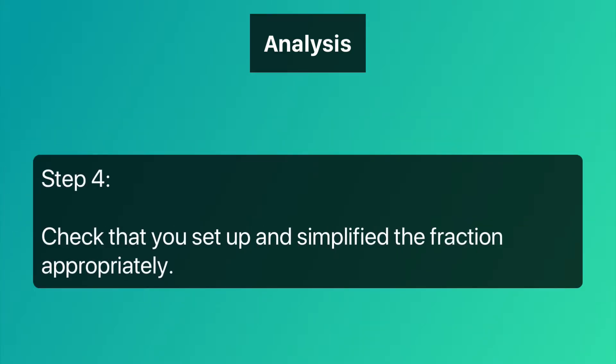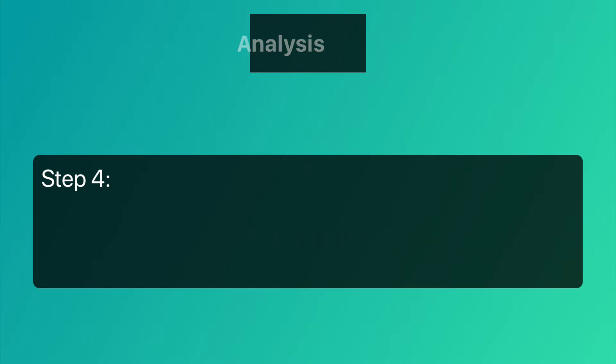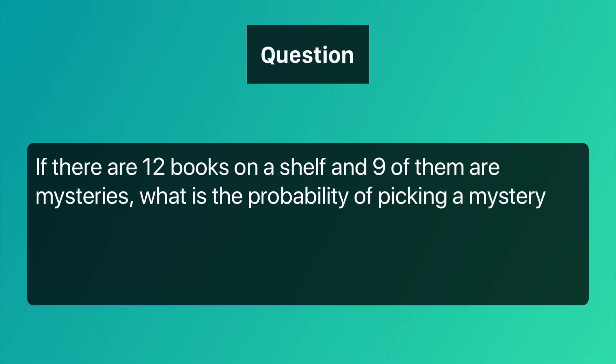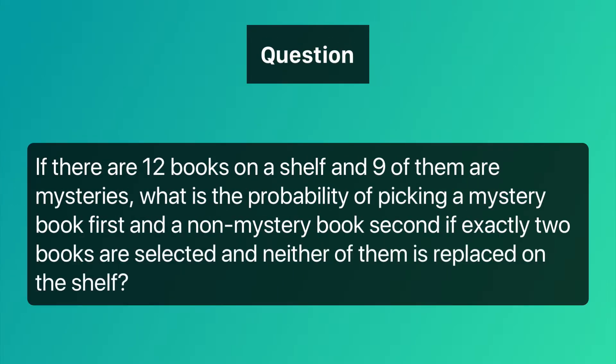Step four: check that you set up and simplified the fraction appropriately. Let's do another example. If there are twelve books on a shelf and nine of them are mysteries, what is the probability of picking a mystery book first and a non-mystery book second?